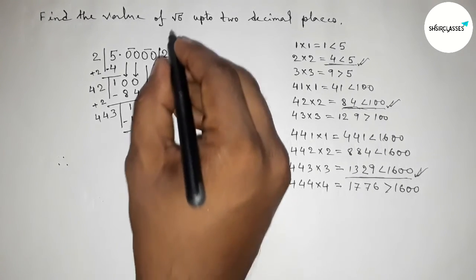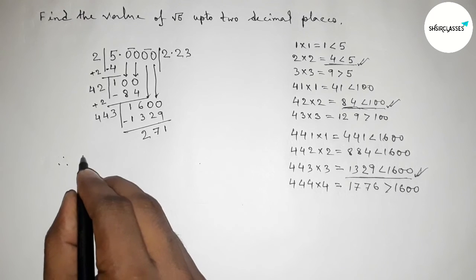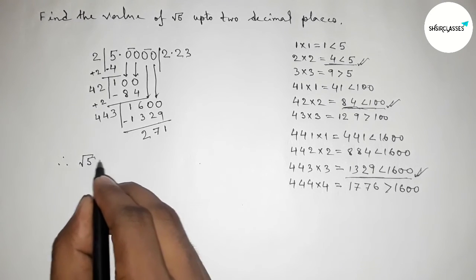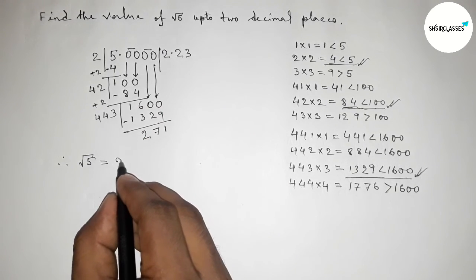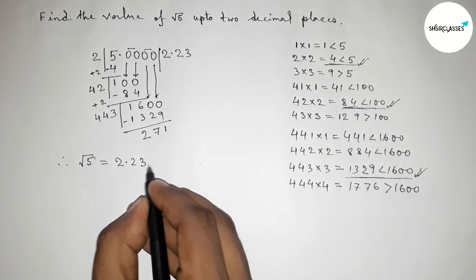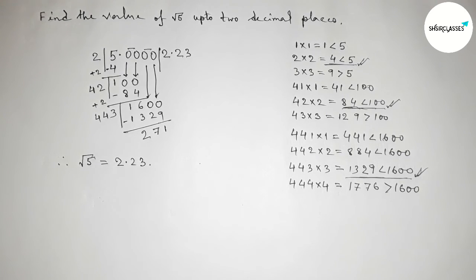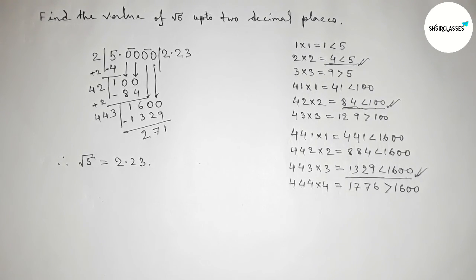So the value of root 5 up to two decimal places is 2.23. That's all. Thanks for watching. If this video was helpful, please share it with your friends.